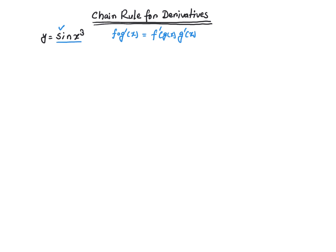So we just need to write this sine x cubed as a composition of two functions f and g. It's very easy to do. Let's assume that g of x equals x cubed and then f of x is just sine of x.